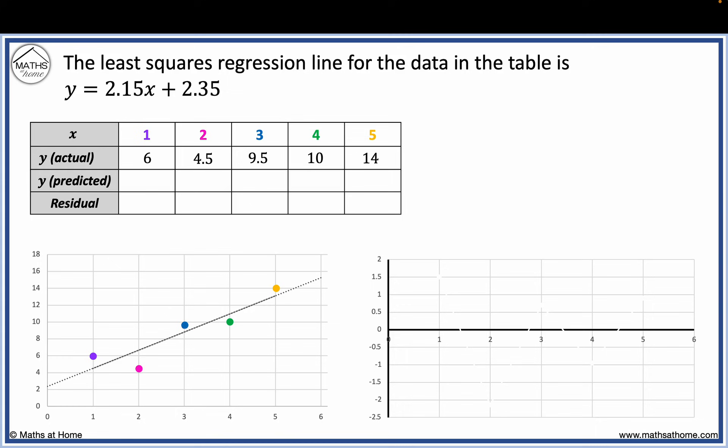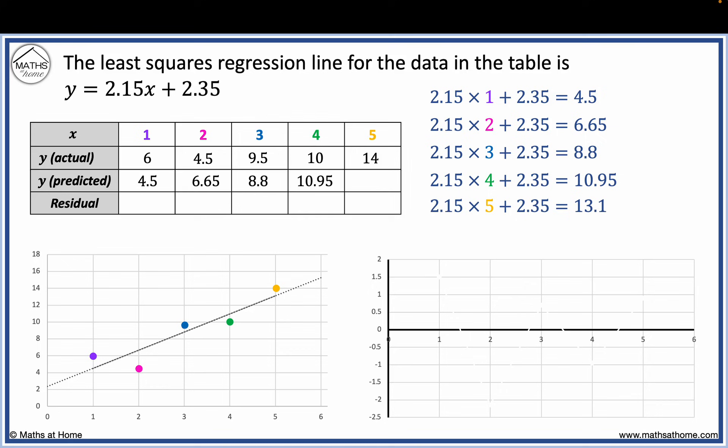To find the predicted y values, we substitute each x value into the least squares regression equation. Substituting x is 1, we obtain an answer of 4.5. When x equals 2, we obtain 6.65. Then 8.8, 10.95, 13.1. These values were obtained by substitution into the least squares regression equation.